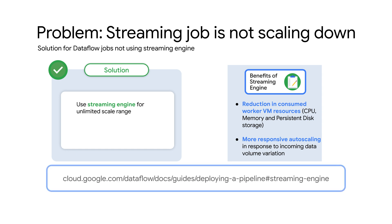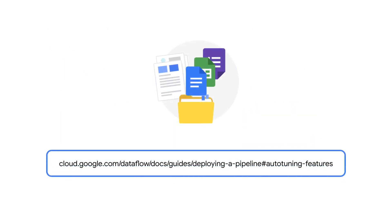Additionally, streaming engine offers more responsive horizontal auto scaling in response to variations in incoming data volume, providing smoother and more granular scaling of workers. For more information about streaming engine, check out the documentation. I hope you found this video useful for learning about auto tuning features and troubleshooting a common issue. Don't miss the next episode where we will share more tips on troubleshooting another common auto tuning issue — stay tuned.